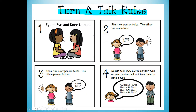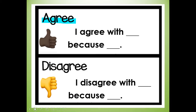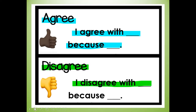Let's go over our turn and talk rules. Number one: eye to eye and knee to knee if you have a partner at home. Number two: first one person talks, the other person listens. Number three: then the next person talks, the other person listens. Number four: do not talk too long on your turn, or your partner will not have time for a turn. You may agree and say, 'I agree with you because,' or you may disagree — and it's okay to disagree as long as you are respectful — and say, 'I disagree with you because.'